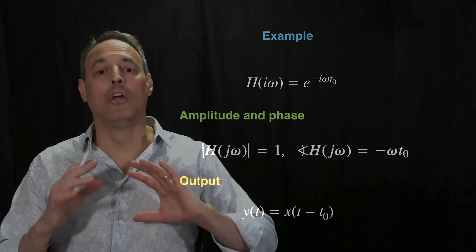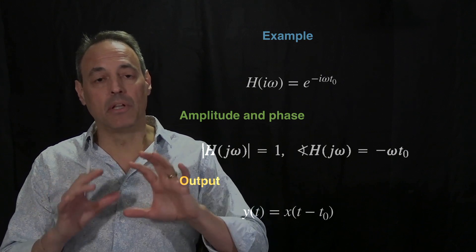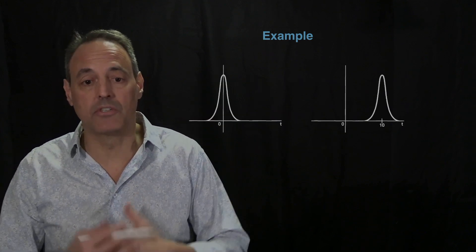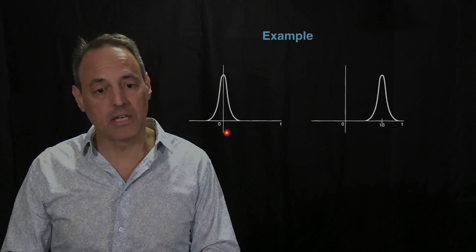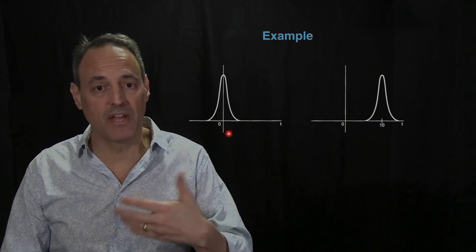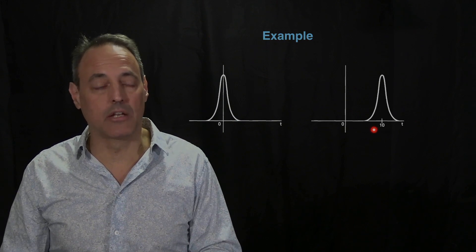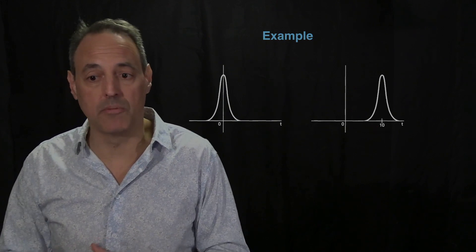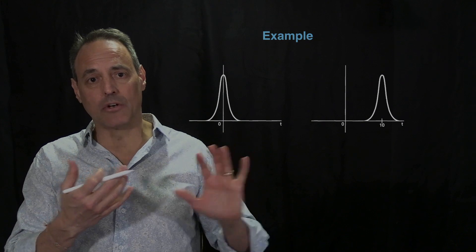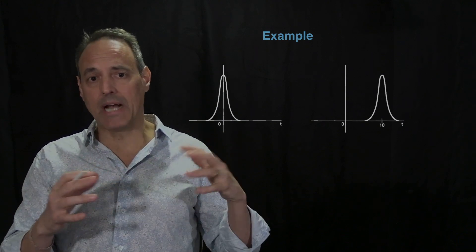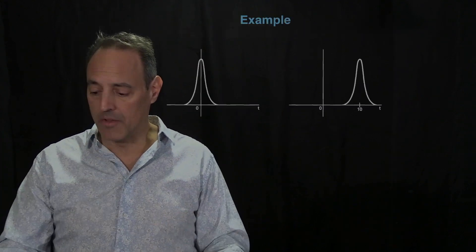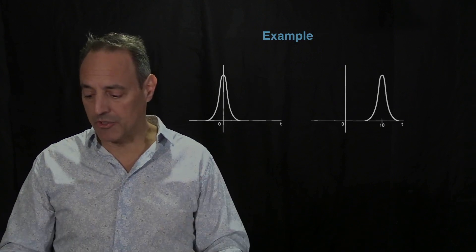Here's a picture of what we just did: you come in with a signal, and if you hit it with that response — essentially a linear phase ramp — it shifts the signal over by t₀, which in this case is 10. So that's a very simple manipulation that allows you to delay a signal by some t₀. This is a practical way to time-sync signals together by simply manipulating their frequency content and creating a delay structure.